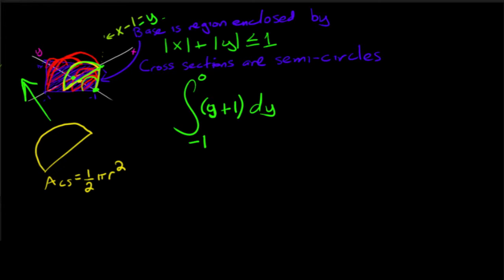This is my radius and so then I'm going to have 1 half pi times the radius squared. Okay, so that's going to give me the area from negative 1 to 0.